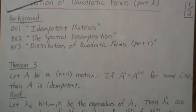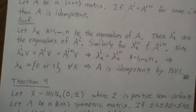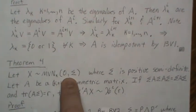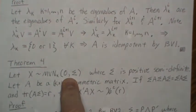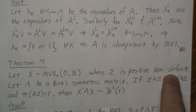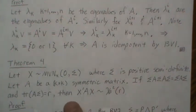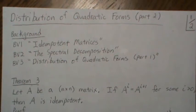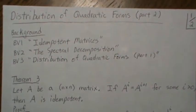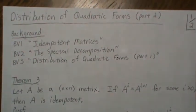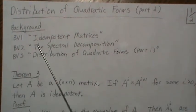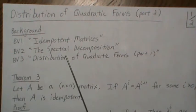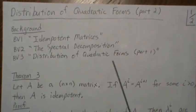In this video we are going to look at it where x is a normal(0, sigma) random variable but sigma is positive semi-definite, and then it has to meet some requirements. Before we get there, we need a theorem that we're going to use. For this video I'm suggesting three background videos: idempotent matrices, the spectral decomposition, and part one of this series, 'Distribution of Quadratic Forms.'